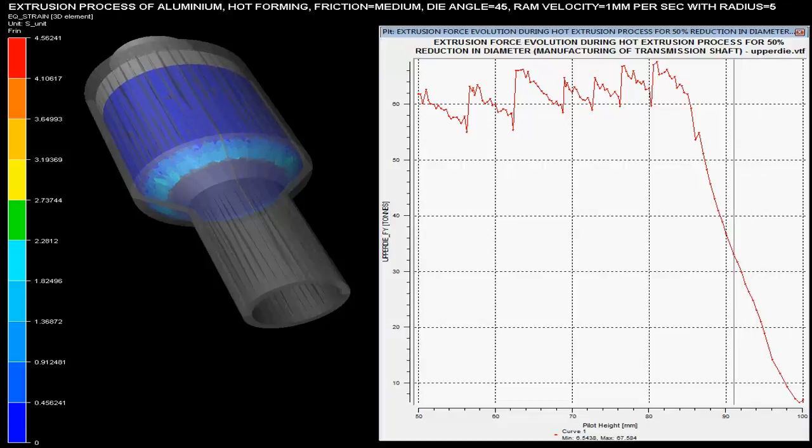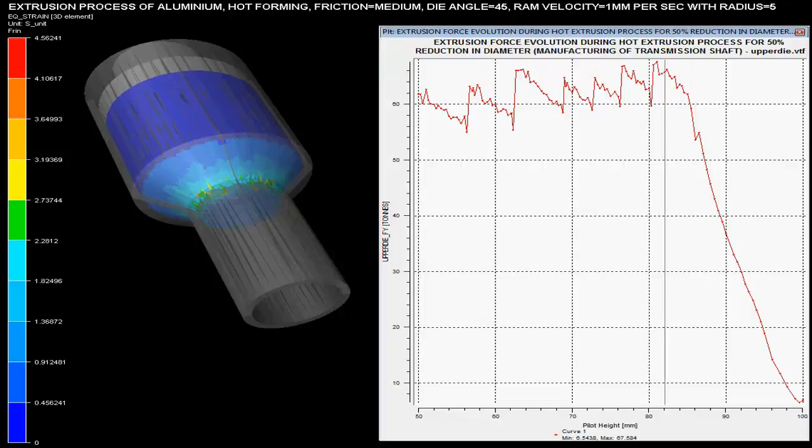Ram velocity is set at 1 mm per second with a radius of 5 mm. The die angle is specified as 45 degrees with medium friction during this hot extrusion process.